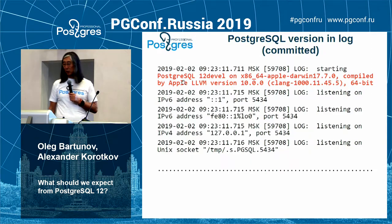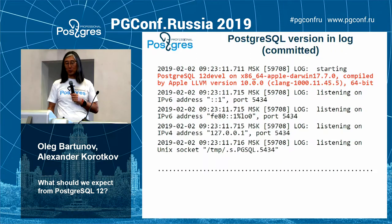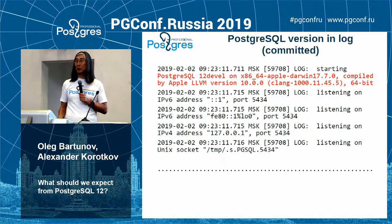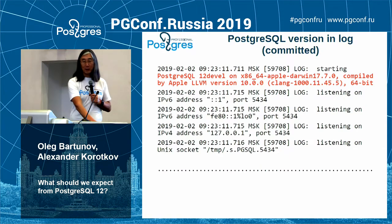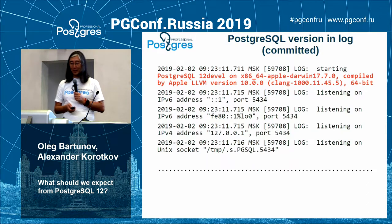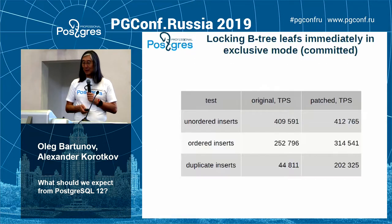Here's a commit that DBAs really wanted: the ability to see the PostgreSQL version in logs. Now you can take the log file and see all the information — version, what it was compiled on, and everything like this. It may be quite useful.